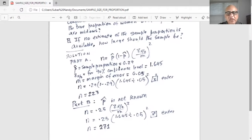So the answer is 271. Notice the sample size with p hat not known is slightly greater than the sample size calculated when p hat is known as 0.29. So n equal to 271 for p hat not known is a conservative estimate of the sample size.